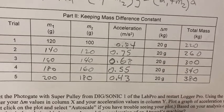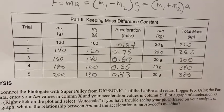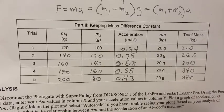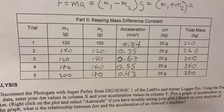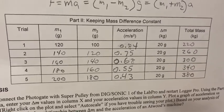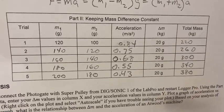Column one is a trial. Column two is M1, which starts at 120 and increases by 20 up to 200. Column three is M2, which starts at 100 and increases by 20 up to 180.